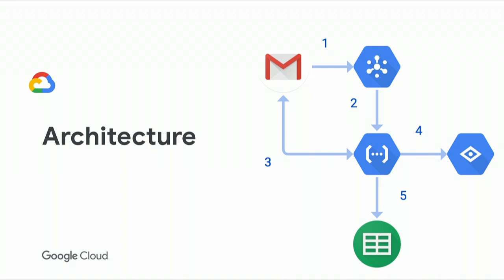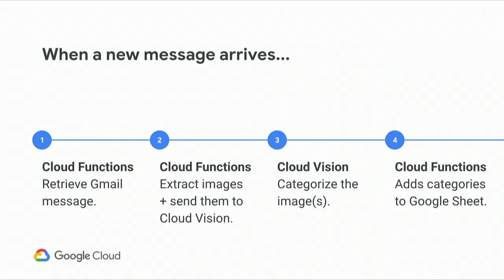Cloud Functions will then write the analysis to a Google Sheet. Imagine I send myself a picture of blue sky. Gmail will send a push notification upon arrival of this message, which will be delivered via Cloud PubSub to Cloud Functions. Since there is an image attachment, Cloud Functions will send the image data to Cloud Vision API. Cloud Vision API will probably return results like blue, sky, nature, et cetera, and Cloud Function will write the result to a Google Sheet.